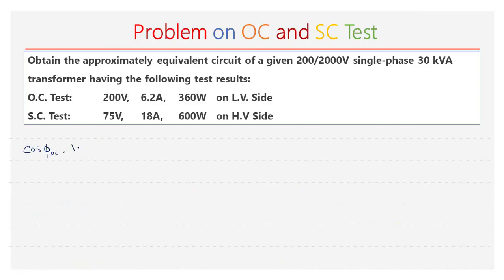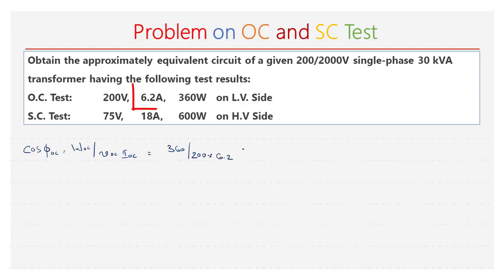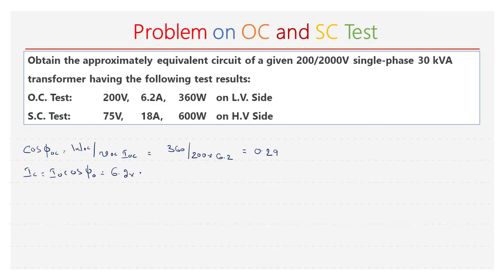Now I am going to use the same formulas for solving this problem. First, let me calculate cos φOC. cos φOC is equal to WOC divided by VOC into IOC. WOC is 360 watts, VOC is 200 V, and IOC is 6.2 A. That is equal to 0.29. And Ic is equal to IOC into cos φOC, which is 6.2 into 0.29, that is equal to 1.8 A.